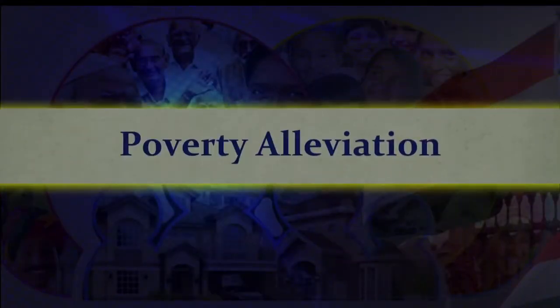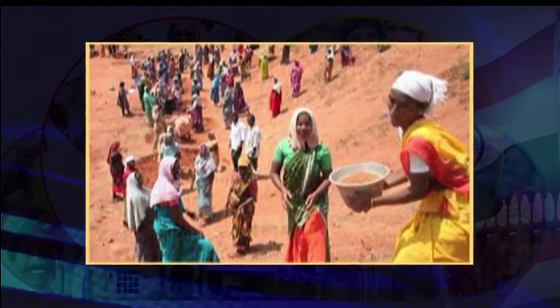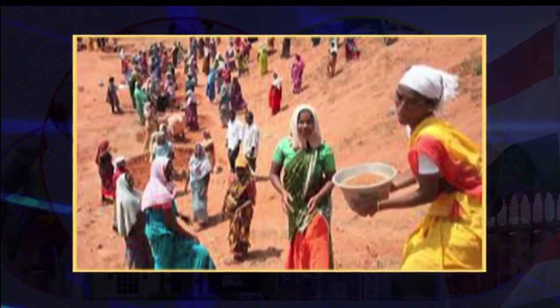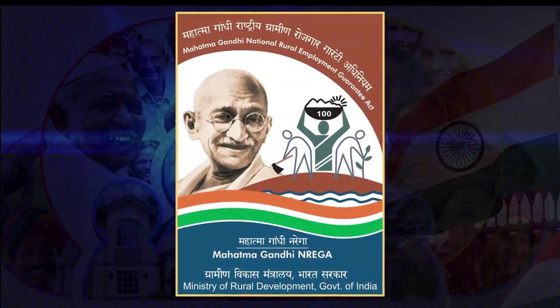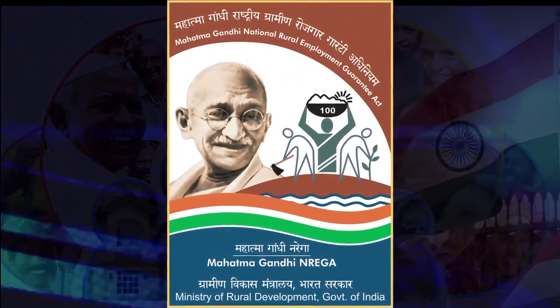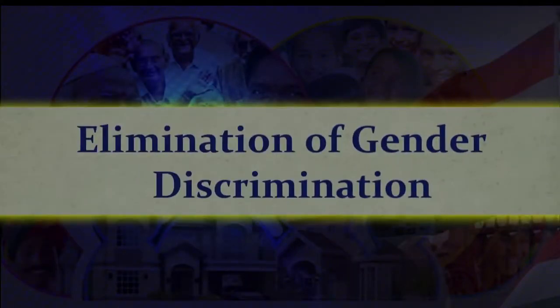Another corrective measure is poverty alleviation. From the 1970s, a number of programs have been implemented for the alleviation of poverty, falling into two categories. The first includes programs to lift beneficiaries by providing them with productive assets or skills, or both, so that they can employ themselves usefully and earn greater income. The second includes programs providing temporary wage employment for the poor and the landless. The Mahatma Gandhi National Rural Employment Guarantee Act (MGNREGA) is being implemented to enhance the livelihood security of people in rural areas by granting 100 days of wage employment in a financial year to a rural household whose adult members volunteer to do unskilled manual work.